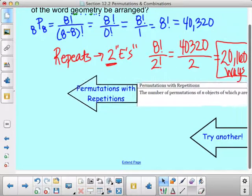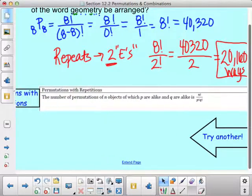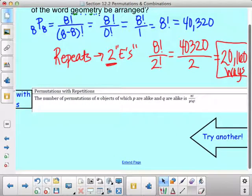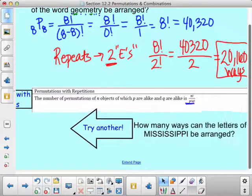Permutations with repeats, the number of permutations of n objects of which p are alike and q are alike is—it's just saying that you divide by whatever is repeating. So let's look at another example.